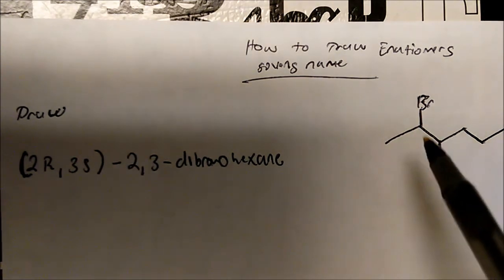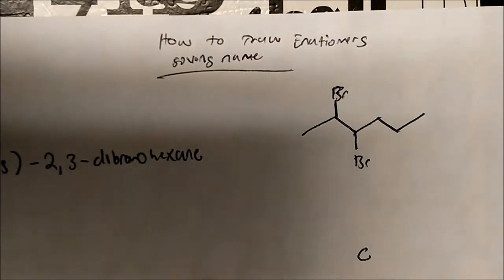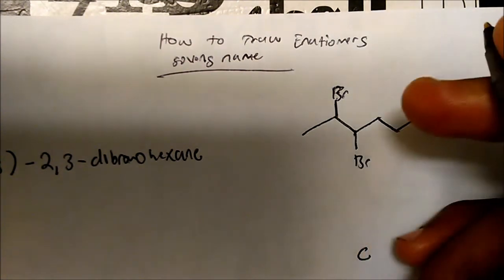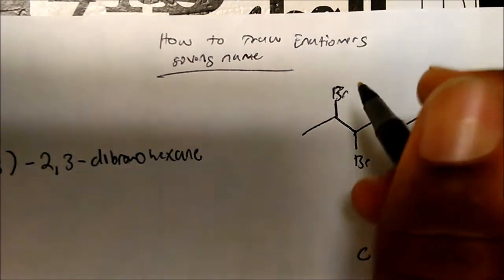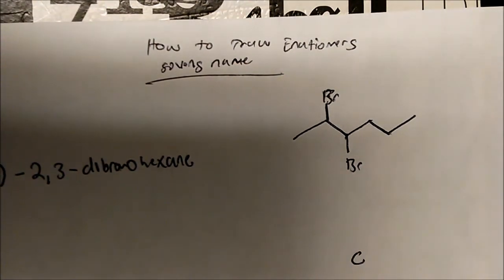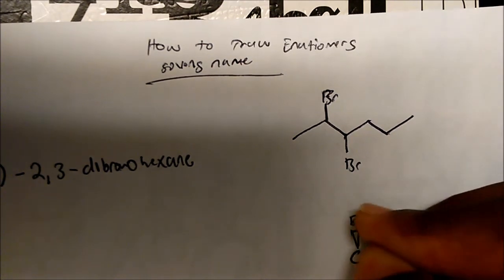So how could we make carbon 2 R and carbon 3 S? Well, it becomes trial and error. So I'm going to start with this carbon here. Notice we have a bromine, we have a methyl group, we have a hydrogen, and this R-group bonded here. So just as a trial and error, I'm going to start with the bromine coming out — I'm going to give the bromine a wedge.